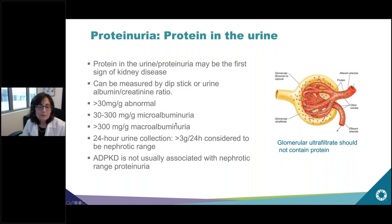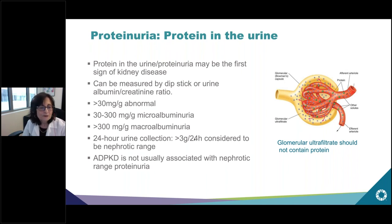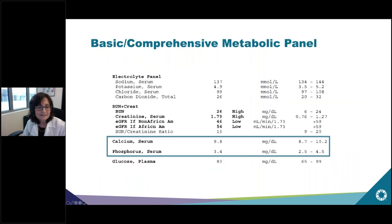We can measure the albumin in the urine and compare it to the amount of creatinine. Sometimes we collect a 24-hour urine, which can be more precise. If you have more than three grams of protein in a 24-hour urine collection, that's considered nephrotic-range proteinuria. In ADPKD, it is not usually associated with nephrotic-range proteinuria, so if you do have this level of protein in your urine, it usually means there's a second problem that needs to be investigated.